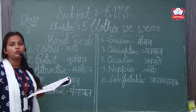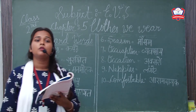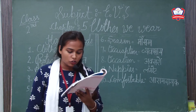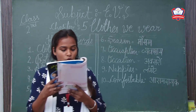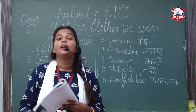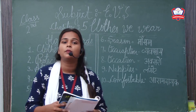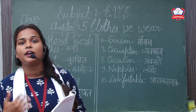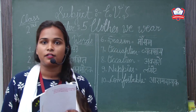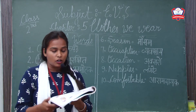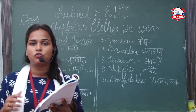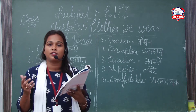Now let's talk about clothes according to age. We wear clothes according to our age. A 6-month-old baby wears a different dress than an old man. A small baby wears baby suits and nappies.